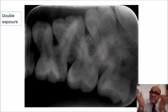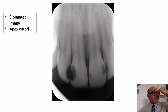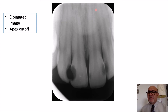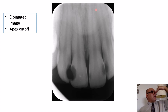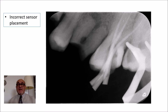An elongated image like this one with apex cutoff is useless. What happened here is that the vertical angulation was decreased, resulting in an elongated image. Next time, you need to increase your vertical angulation so that the image will be reduced. Otherwise you will end up with this case where the apex is cut off and the radiograph is useless.